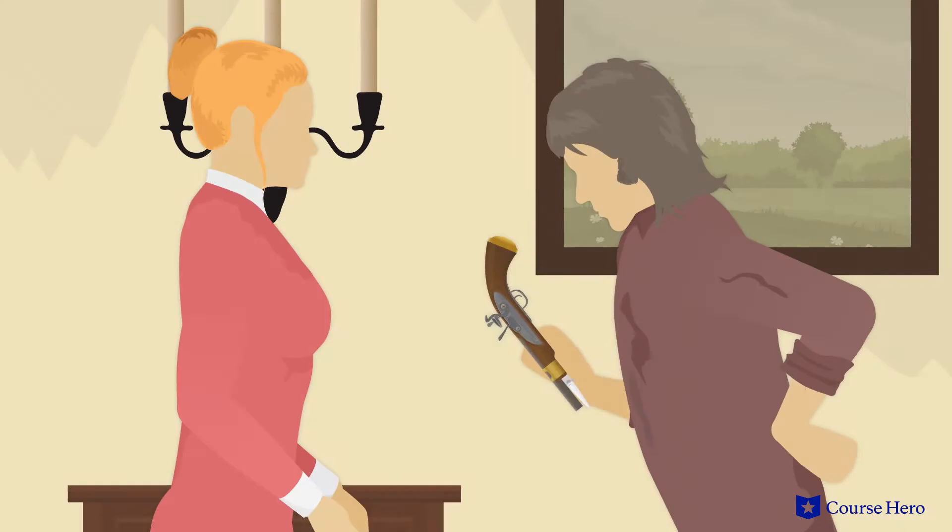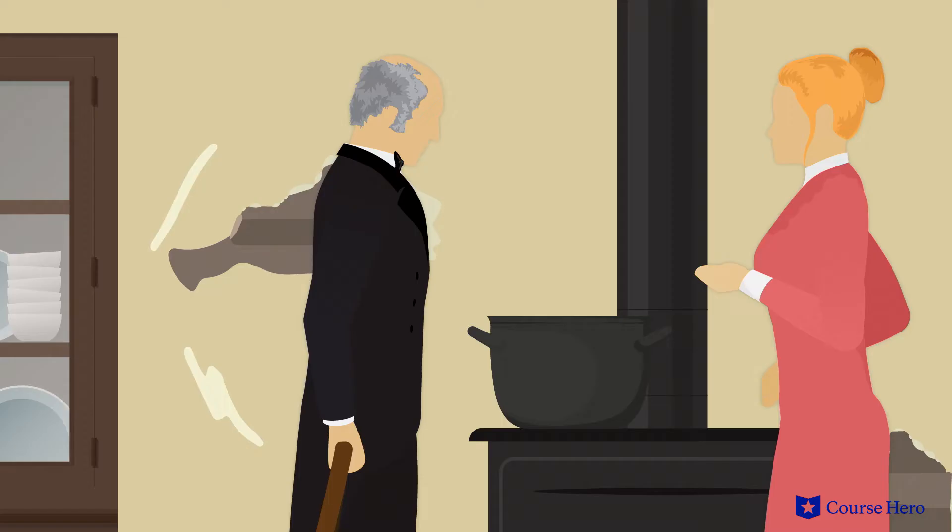Holding the gun, Isabella was struck by how powerful it made her feel, and Hindley jealously snatched the gun away.